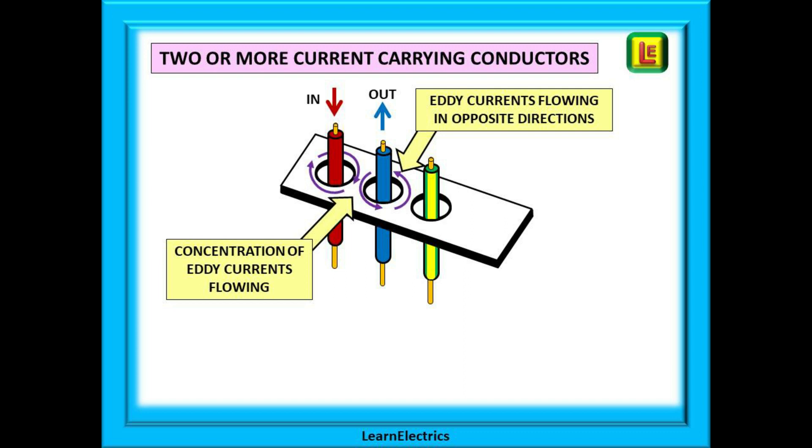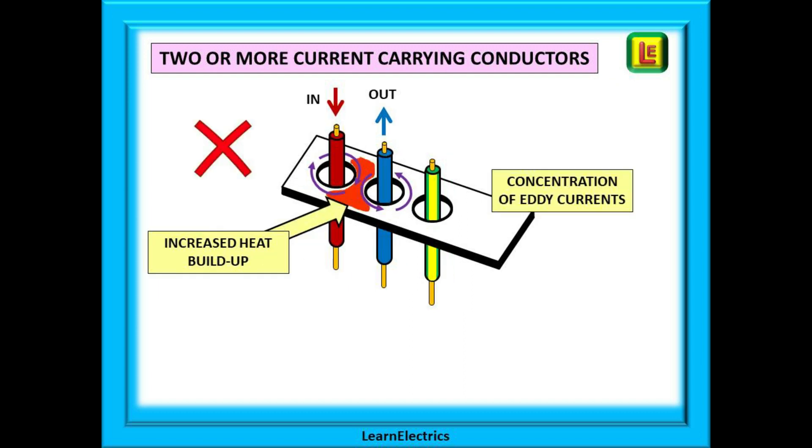As there is an in current and an out current they are flowing in opposite directions. The eddy currents also circulate in opposite directions and at some points there is a buildup or increase in the eddy current flow where they meet. Where the eddy currents are in close proximity there is an increase in the heat that is generated in the metalwork.